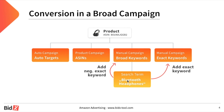As soon as a search term converts in the broad campaign, this search term is automatically transferred to the exact campaign as an exact keyword. In addition, this search term is then also excluded in the broad campaign as negative exact, so that we do not generate performance data for the same keyword in two different campaigns.